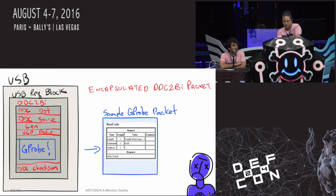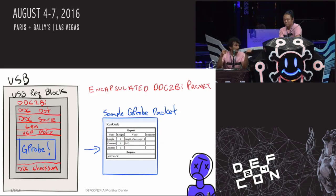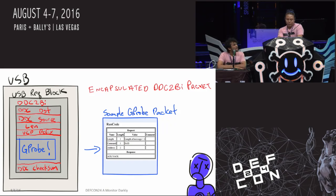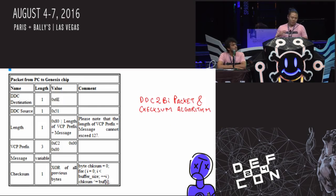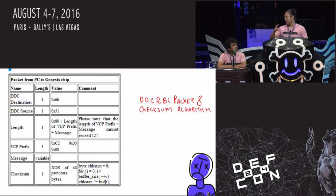The USB request block contains a DDC 2BI package, which is an encapsulation over a G probe packet to do different commands. One of the commands is a 'run code' command, which allows us to put the program counter anywhere in the monitor — how convenient. If we look into the G probe documentation, all of the checksum algorithms are laid out for you — they're very simple. So we're taking messages that are supposed to go into I2C, packing them into USB, and sending it over to the monitor via the USB interface.